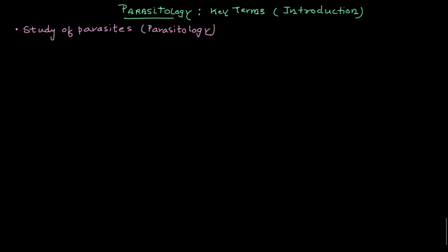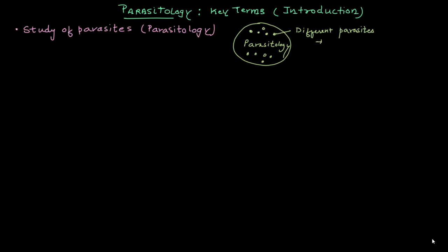Let me show you a diagram to explain the meaning of parasitology. Suppose you have a big circle — that's your parasitology — and there are very tiny small circles inside it representing all the parasites and parasitic diseases. If you're studying parasitology you will be studying many different types of parasites, including the malaria parasite and trypanosoma. So to understand how parasites transmit disease we need to understand the key terms in parasitology.